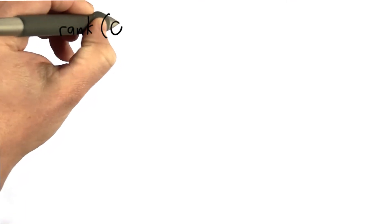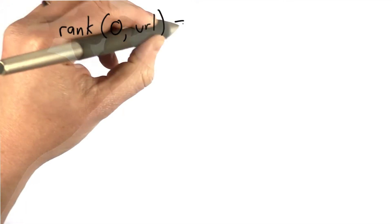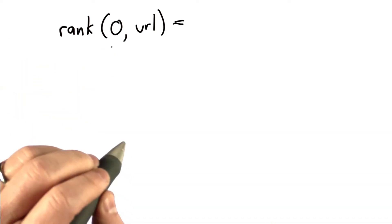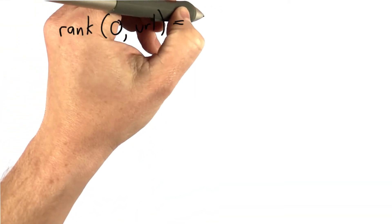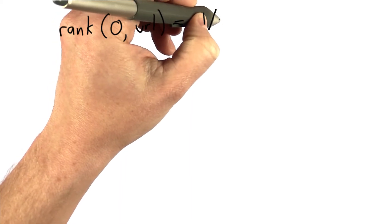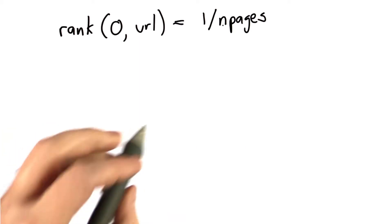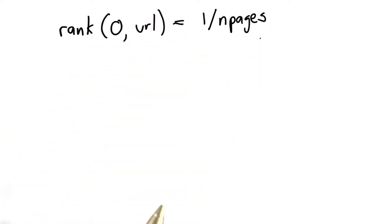So let's remember how we defined our ranking function. We said we're going to have a time step. We're going to keep going through steps to get more accurate rankings, but initially we're going to give every rank 1 divided by the number of pages. Before I called that capital N, I'm going to use nPages as a more Pythonic variable name for that.